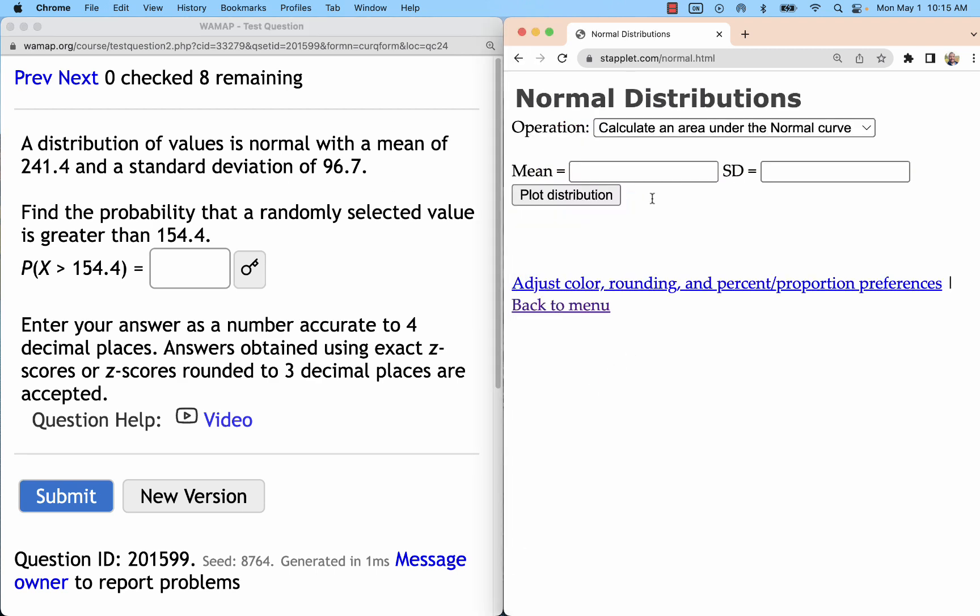We'll go to staplet.com, normal distributions, and remember this has two operations. Here I'm looking for area because I'm trying to find a probability. I'm looking for the output of this probability function.